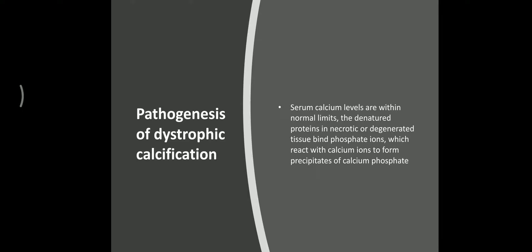Regarding the pathogenesis of dystrophic calcification: the serum calcium level is within normal limits. What happens is the denatured proteins in the necrotic or degenerated cells bind with phosphate ions, because calcium is attracted towards phosphate, forming a precipitate of calcium phosphate. So not only calcium, but also phosphate ions are deposited together.